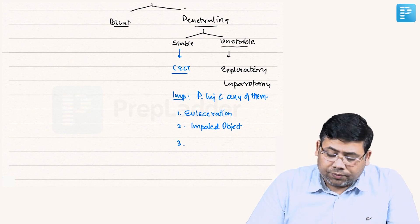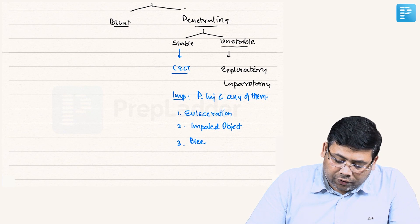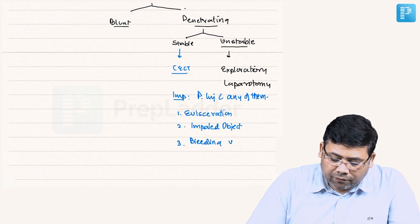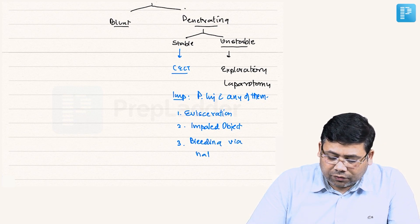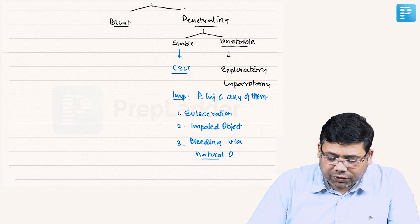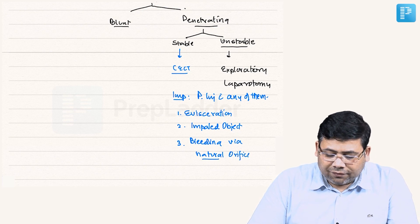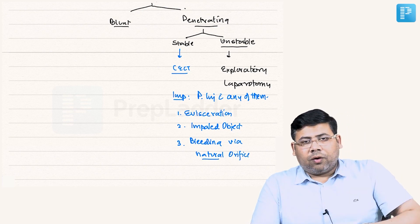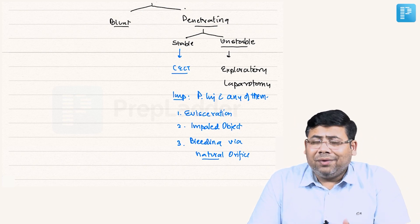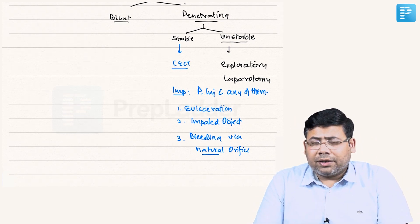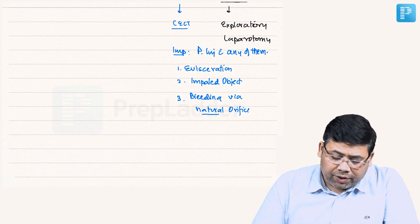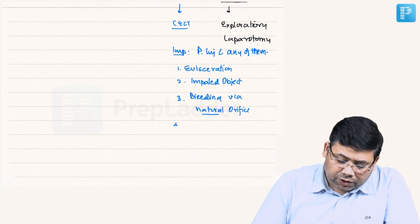Evisceration, impaled object, bleeding via natural orifice. Now this is again very important, bleeding via natural orifice, because someone has stabbed the patient over the abdomen and the patient is bleeding PR. That means there is a breach of GI tract. That is why the blood is trickling down, so breach is very important.